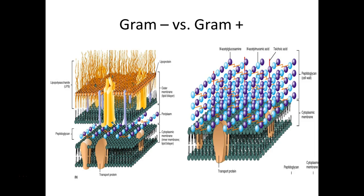What happens to this thick peptidoglycan layer in the gram stain that makes these cells stay purple? It shrinks. Remember: first we apply crystal violet, then iodine — which binds with the crystal violet to make a bigger molecule. Next comes the alcohol decolorizer, but in gram positives, the peptidoglycan layer shrinks, closing up the holes so that the crystal violet-iodine complex gets trapped inside and can't get out. These cells stay purple even after decolorization.